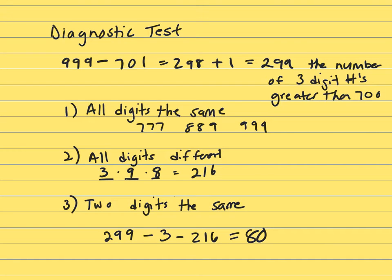Of the three-digit integers greater than 700, how many have two digits that are equal to each other, and the other one is different?